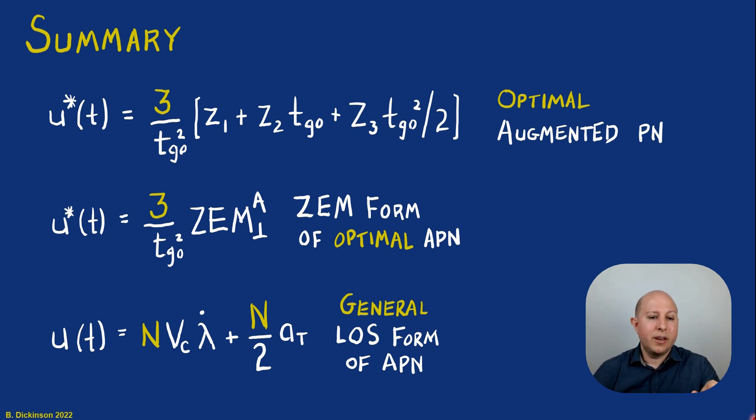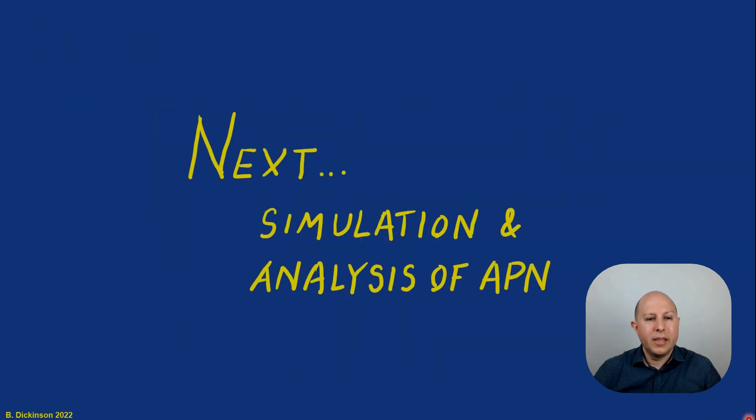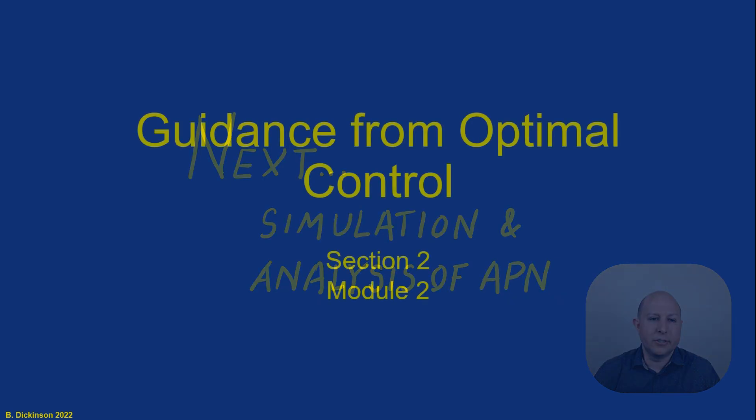In this third case, I've written it in terms of line of sight. Remember in section one that we showed that the first two terms in the top augmented proportional navigation equation, z1 plus z2 time to go, that's just true pronav. The first term in the bottom equation, this is just true pronav. So indeed, we are augmenting true pronav with some acceleration term. In the next section, we're going to simulate and analyze augmented proportional navigation and compare it to true proportional navigation.